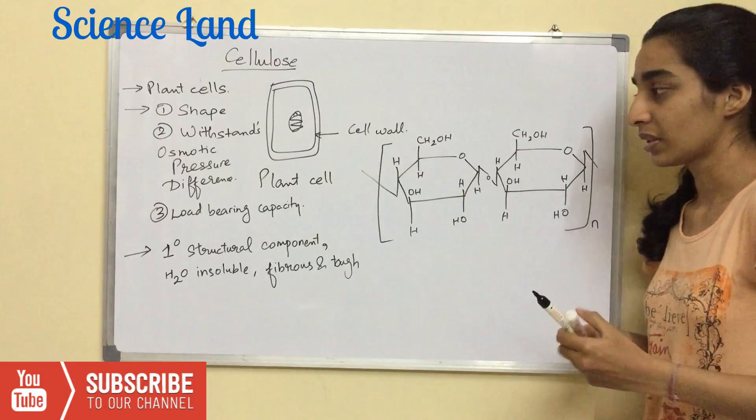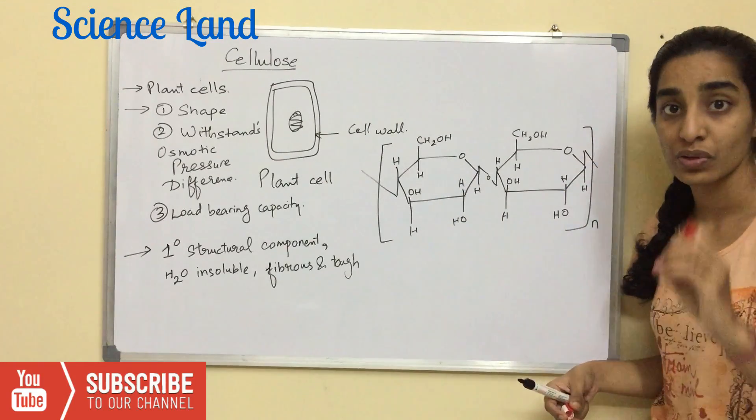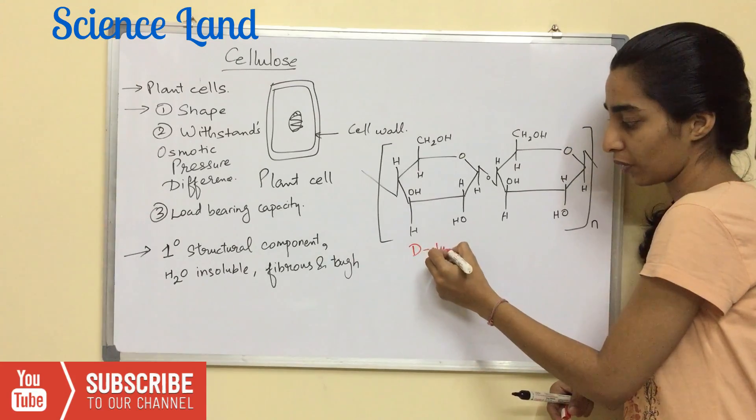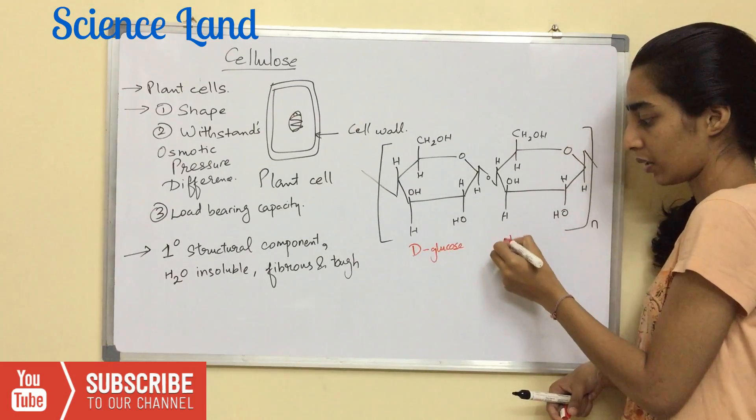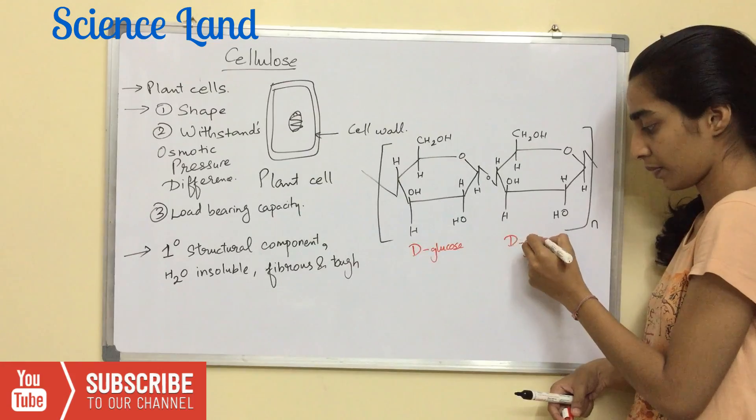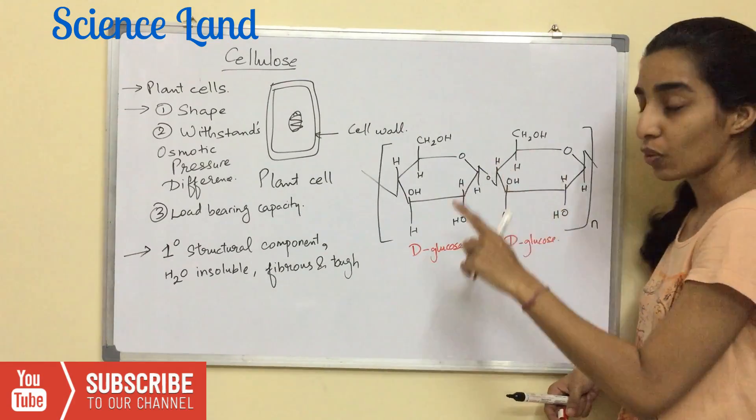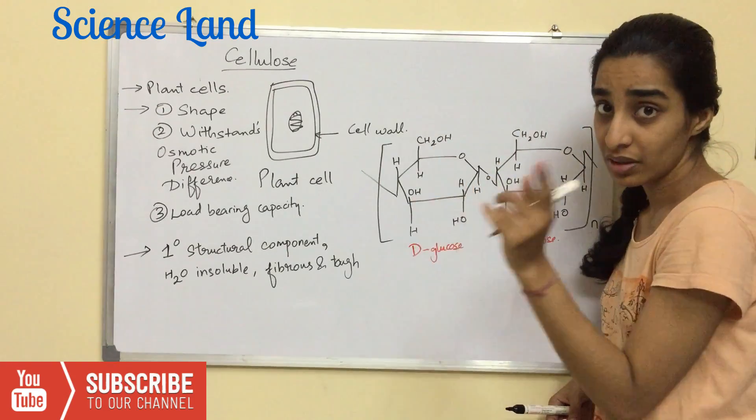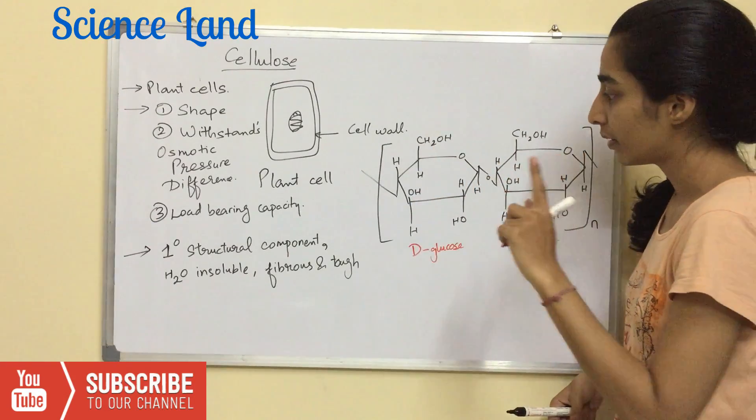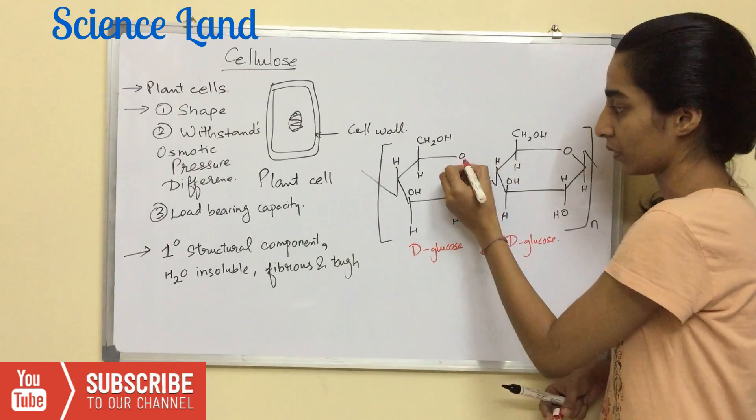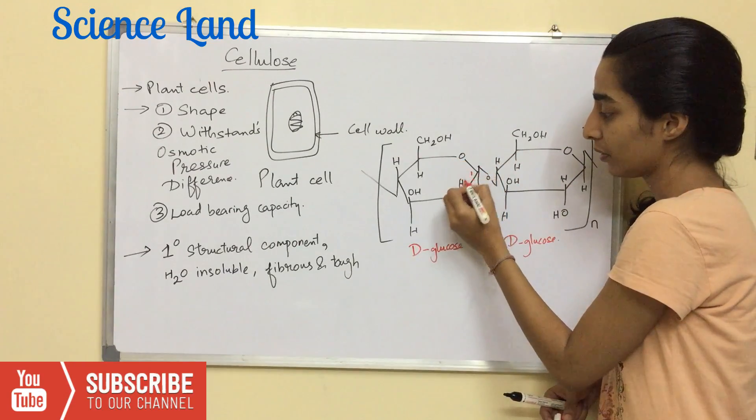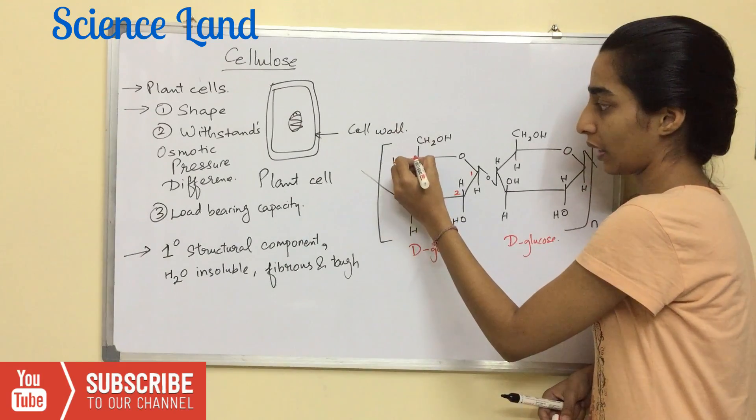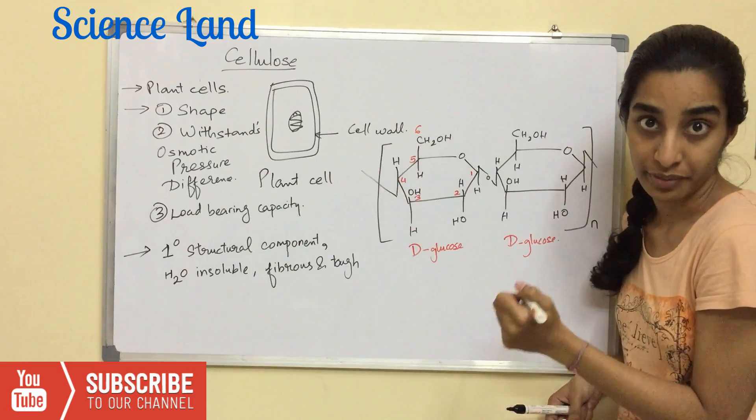So this is how the structure of cellulose looks like. This is one molecule of glucose, another molecule of glucose. Glucose has 6 carbons, right? So we number the carbon atoms in a glucose molecule. So this is oxygen, 1st carbon, 2nd carbon, 3rd carbon, 4th carbon, 5th carbon and 6th carbon.